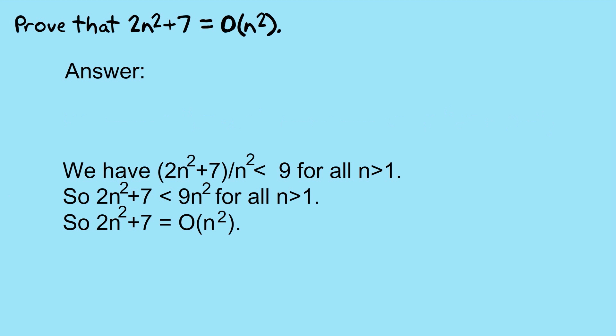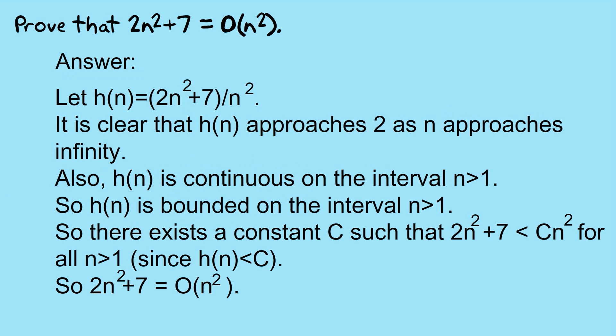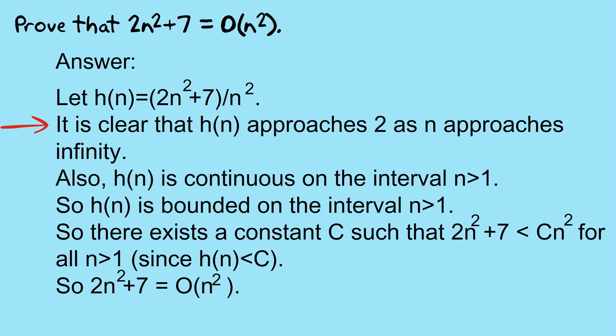There's a final way you can do it where you don't actually work out the constant at all, amazingly, and it relies on first year calculus. So we let hn equal 2n squared plus 7 divided by n squared. We then say that hn approaches 2 as n approaches infinity. We then say that hn is continuous on the interval n greater than 1. So we conclude using first year calculus that hn is bounded on the interval n greater than 1. So there exists a constant c such that 2n squared plus 7 is less than cn squared for all n greater than 1, because that, after all, is what it means to be bounded. And so then we can conclude that 2n squared plus 7 is equal to O of n squared.